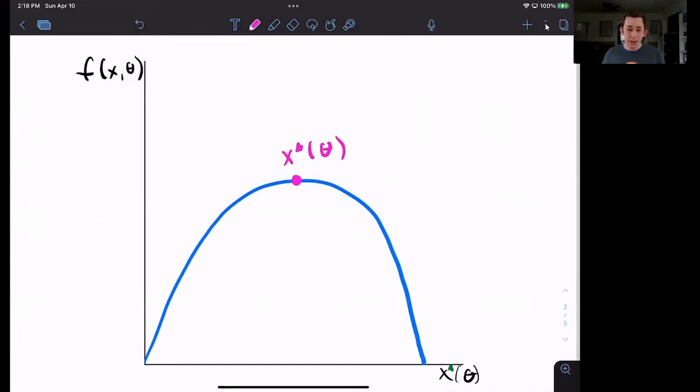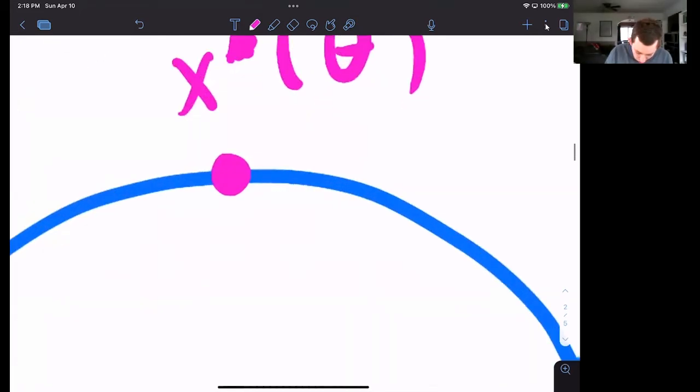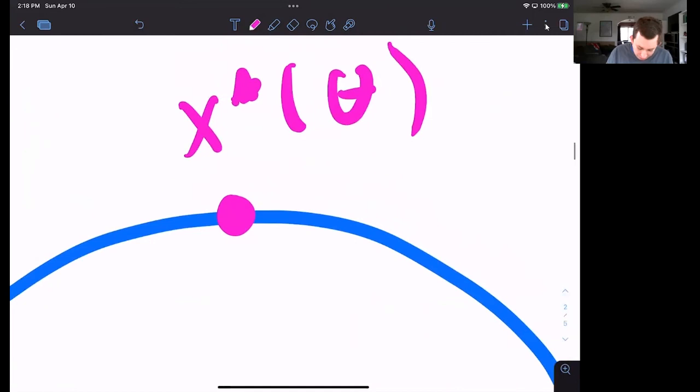Now notice that because it's the max, if I zoom in really, really far into this graph, this line is going to look almost straight. So it's going to be something like this. And that is the part of maximizing where we say the derivative is equal to zero at the max.